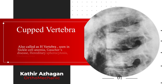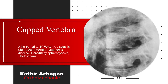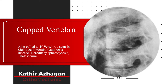Cupped vertebra or H-vertebra is a result of central depression in the end plate that occurs with an abrupt transition to the more normal periphery. It is usually seen with sickle cell anemia disease, but can also be seen with Gaucher's, hereditary spherocytosis, and diseases like thalassemia.